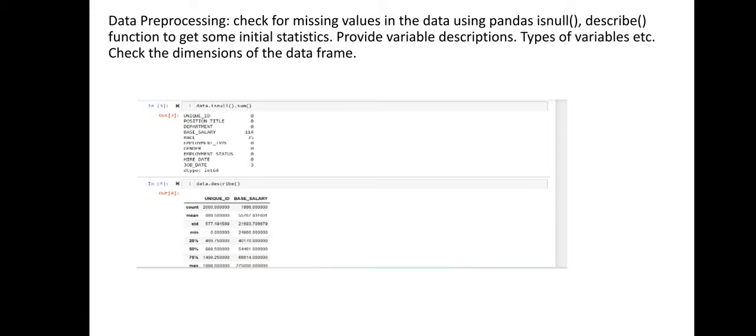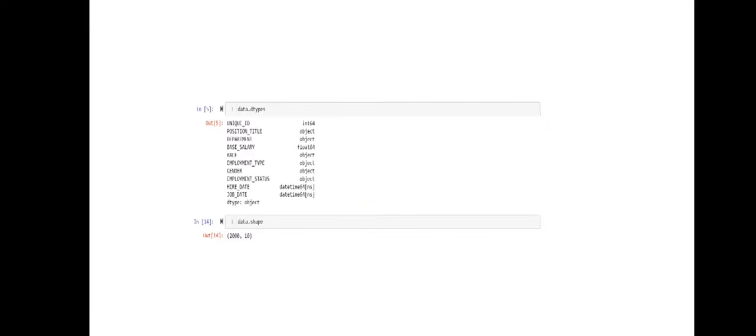The describe() function displays all these statistics in a single call. The isnull() function shows how many values are missing in your dataset. Writing data.isnull().sum() displays all features along with their respective null value counts. We can also check the data types of the DataFrame.